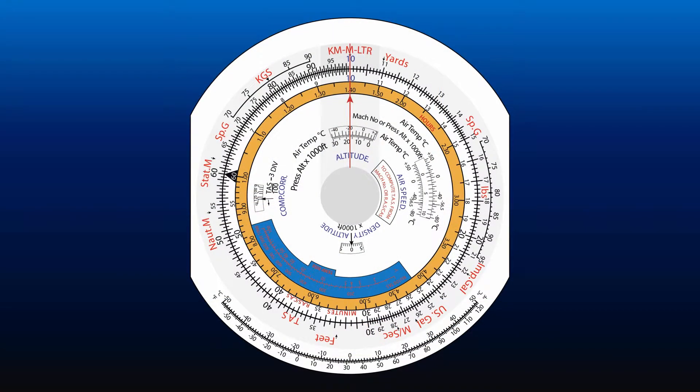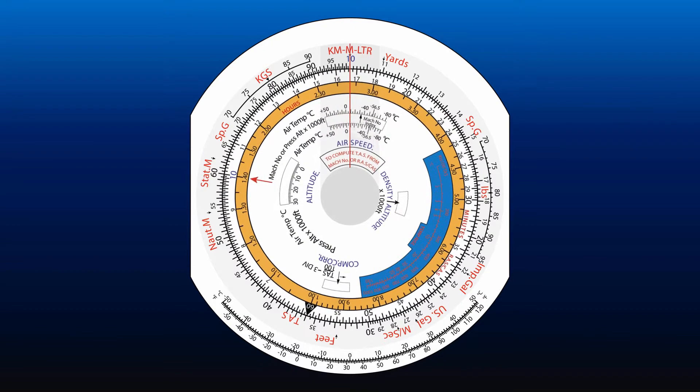Align the 10 index on the inner scale with 60 on the outer scale to expose the Mach number index in the airspeed window.